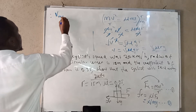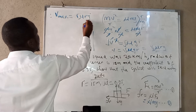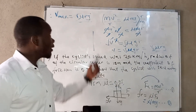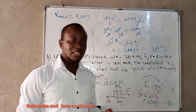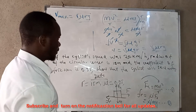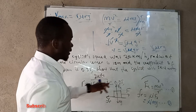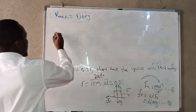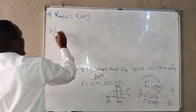Therefore the maximum permissible speed is v equals square root of mu times r times g. This completes part a. Now let us proceed to find part b.